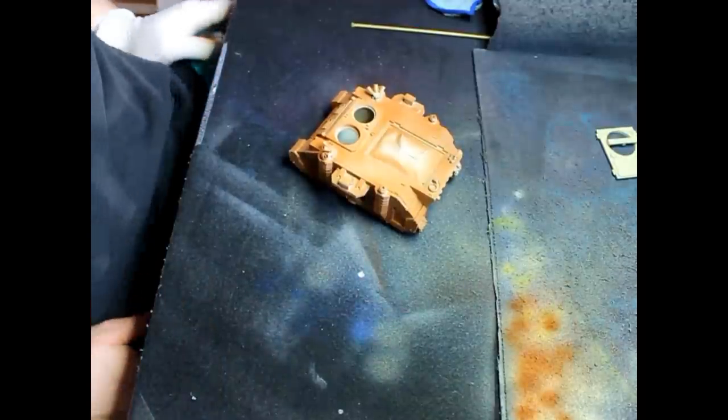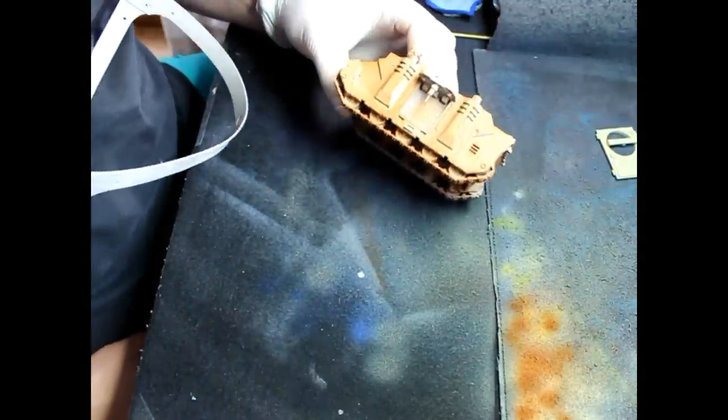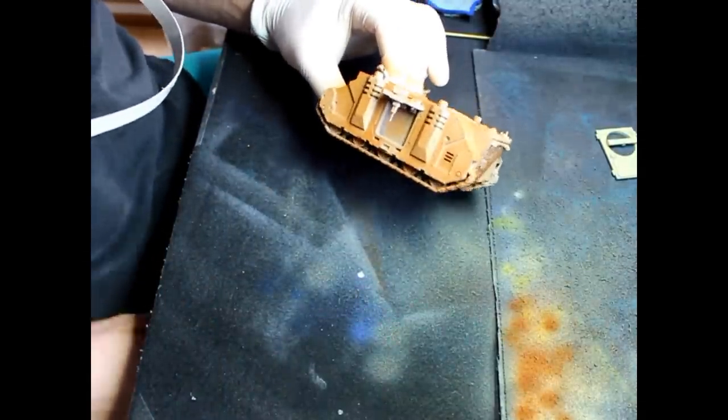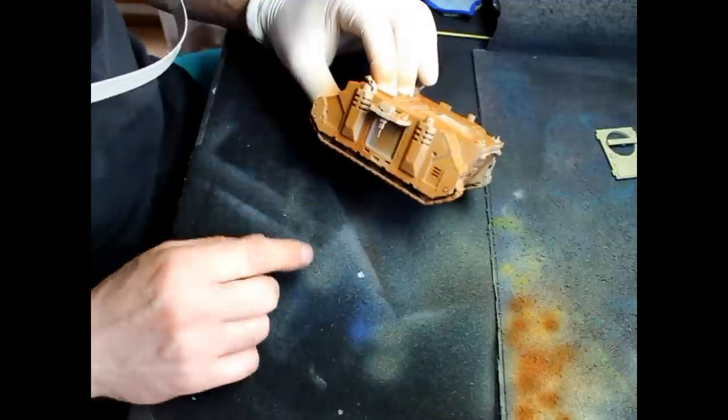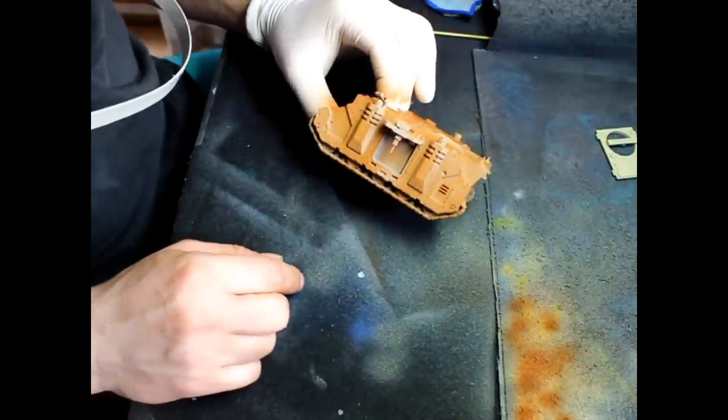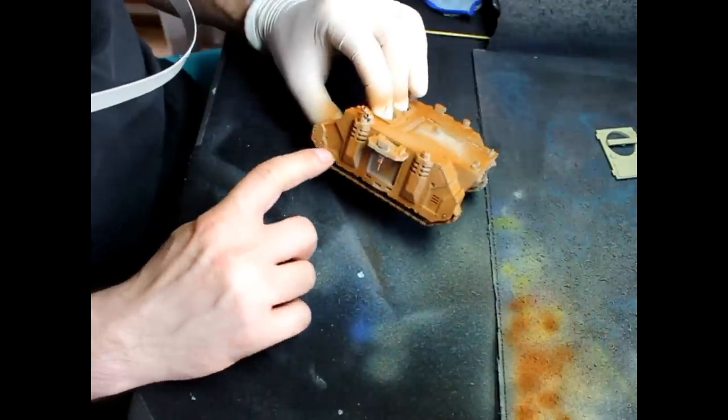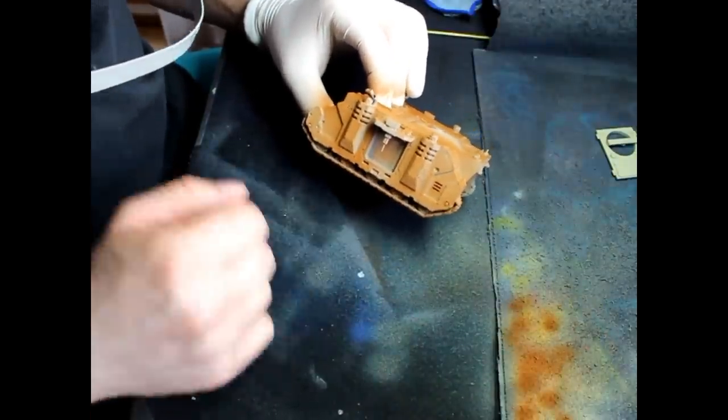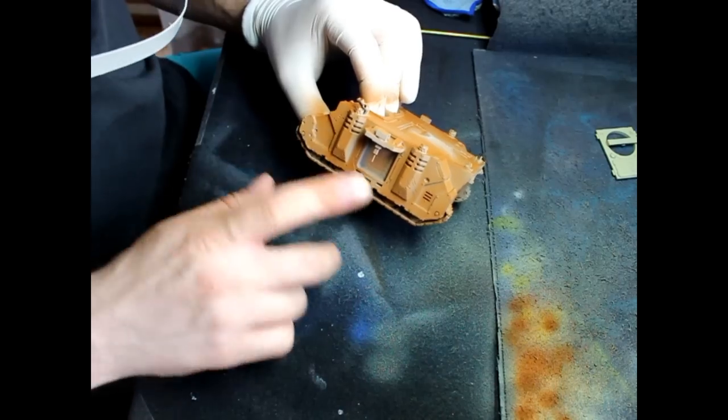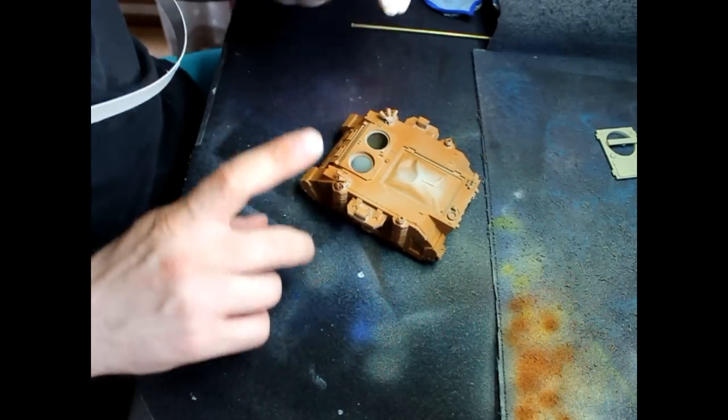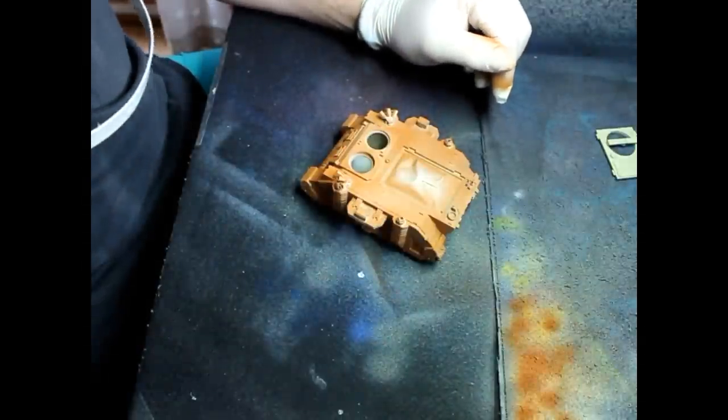Once you did a base coat of Beastie Brown, it doesn't need to be a base coat that's really thorough. Why? Because first of all, rust would be darker in areas where it's more heavy and lighter, so if you look in the crack here, that's where you're going to have your brown.